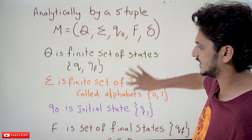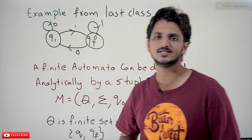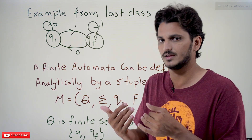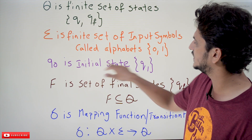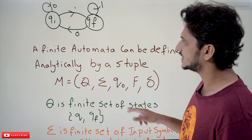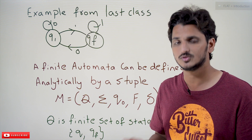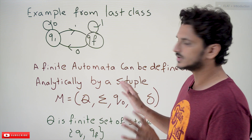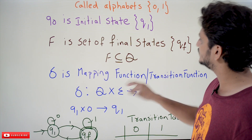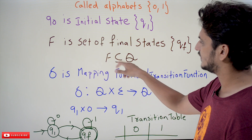Q0 is the initial state. In our example, Q1 is the initial state — that is where our logic starts from. F is the set of final states. In our example we have only one final state, but we can have multiple final states — those examples will be discussed in coming classes. Final states are a subset of Q, so we write F ⊆ Q.